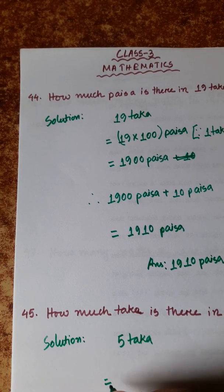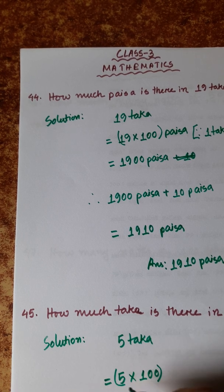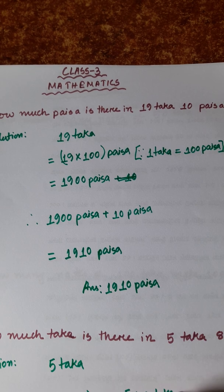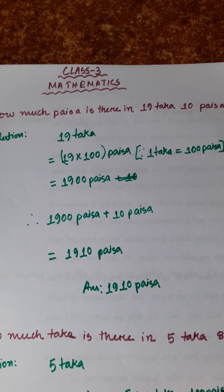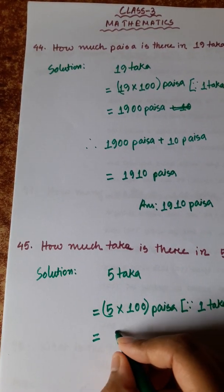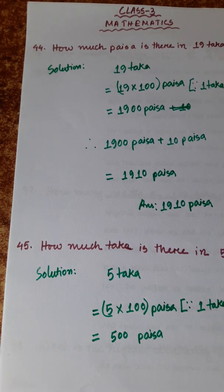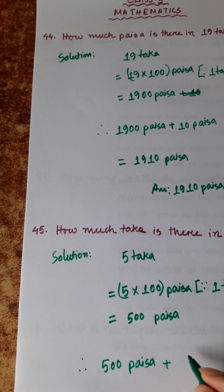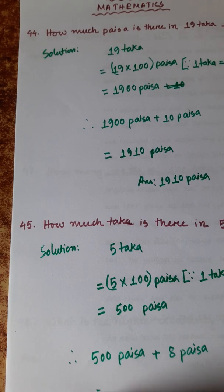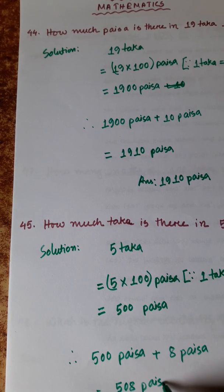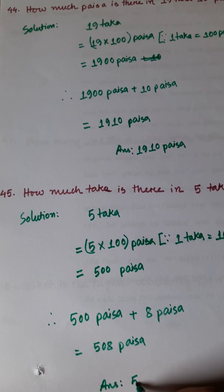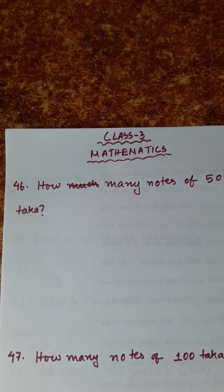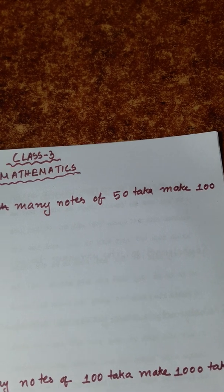Number 45: 5 taka is equal to 5 into 100 paisa, since 1 taka is equal to 100 paisa. So 5 taka equals 500 paisa.